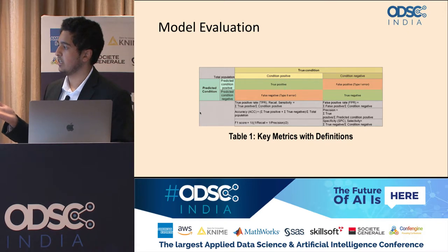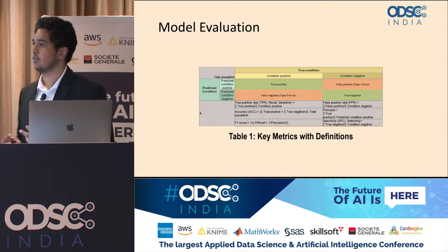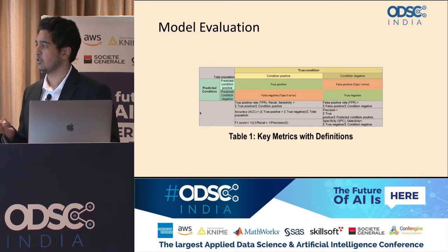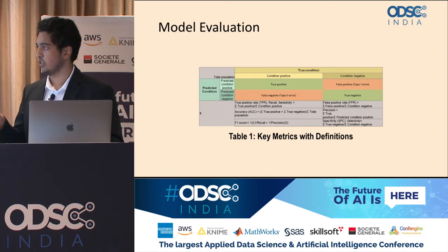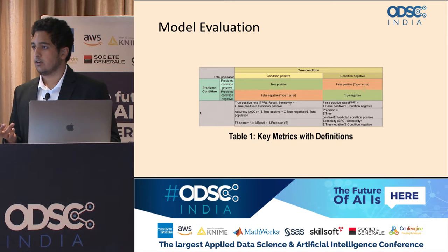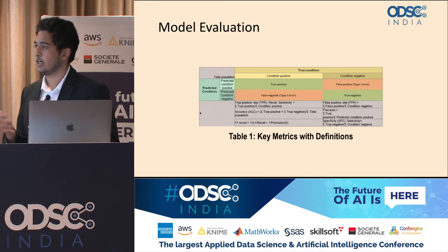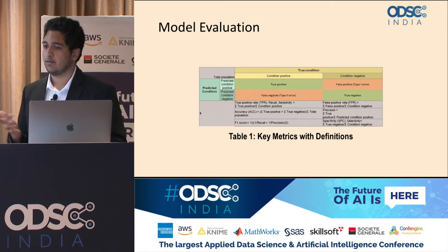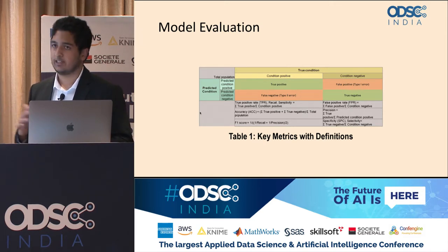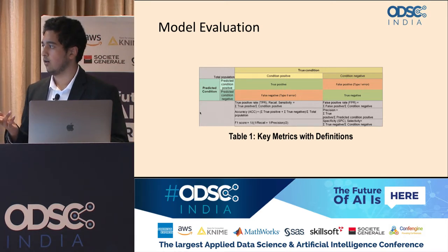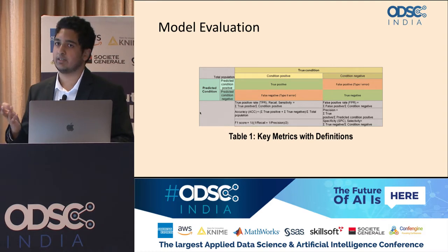Key evaluation metrics used are precision, recall, and accuracy. Accuracy is how many you got right out of the total. Recall is out of all the positive values, how many were you able to detect. Precision is out of the ones labeled as positive, how many are actually positive. In the medical domain, people focus more on recall than precision because the impact is higher — detecting someone with a lung nodule early can save a life, while a false positive, though bad, doesn't have the same impact as missing the nodule altogether.